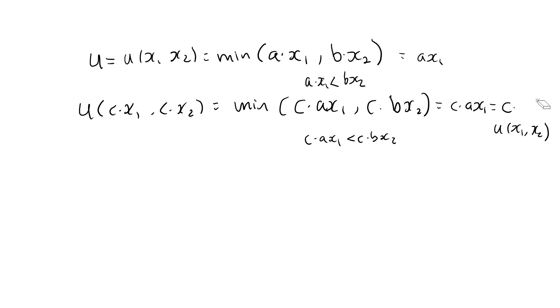If a times x1 is bigger than b times x2, a similar type of argument will show that this will still hold. The utility function is homogeneous of degree one and preferences are homothetic.